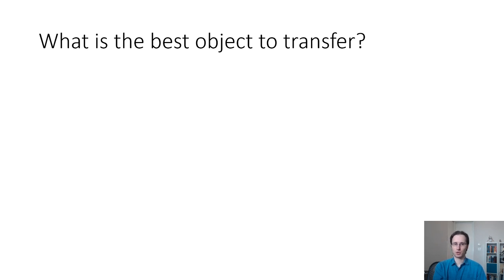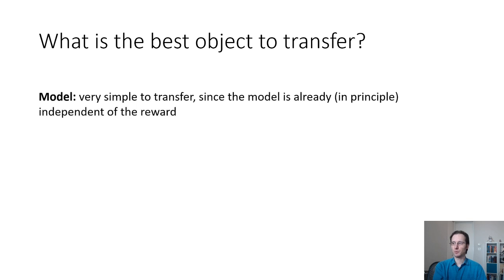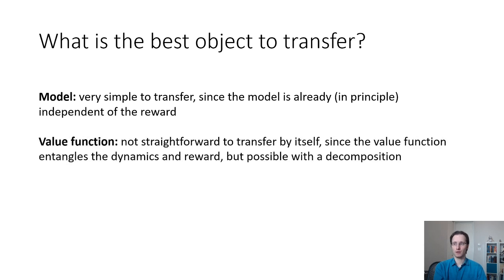So what is the best object to transfer in this kind of setting? We could transfer the model. The model is very simple to transfer since it is already, in principle, independent of the reward. And since the dynamics are the same between the source and target domain, if we can learn a very good model, we would expect it to be just as useful in the target domain. Somewhat less trivially, we could imagine transferring the value function. This is not straightforward to transfer by itself, since the value function entangles the dynamics and the reward, but it is possible with a clever decomposition.